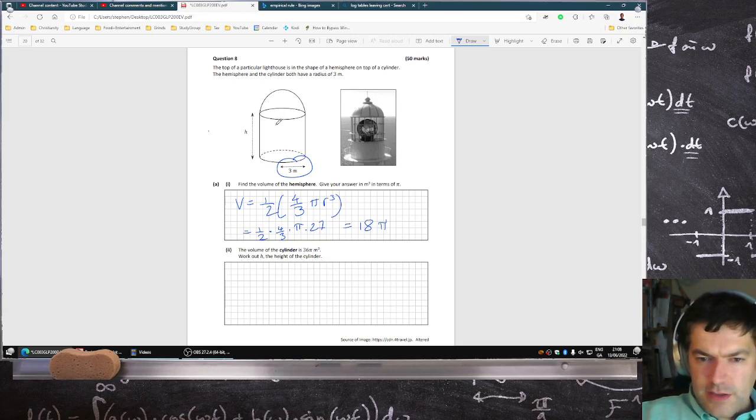So the volume of the cylinder is 36 pi, work out the height. The volume is pi r squared h, and that's equal to 36 pi, and you can cancel the pi's. r squared is 3 squared, so 9h equals 36. So I hope you can see that the h has to be 4. 9 times 4 is 36, or in other words, h is 36 over 9, which is 4 meters.